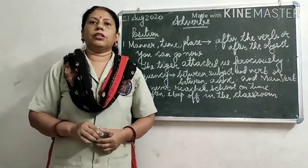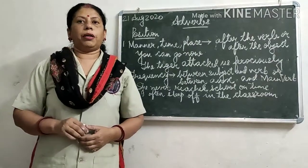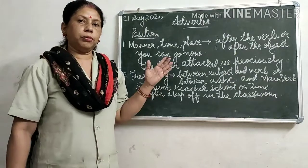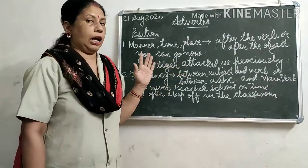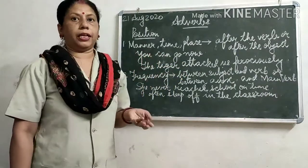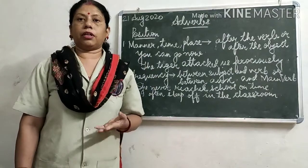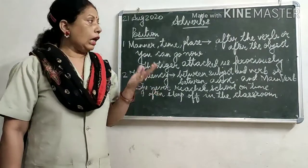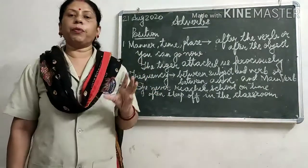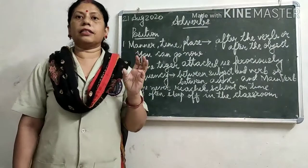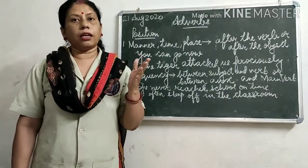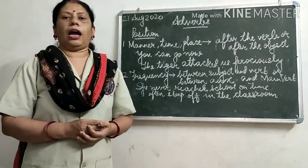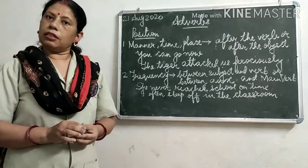Good afternoon dear children. In yesterday's video we studied about adverbs and the kinds of adverbs — adverbs of place, frequency, and degree. Now let us see how we place these adverbs in a sentence. What is the position of these adverbs in a sentence?